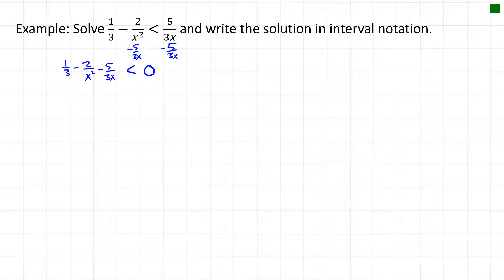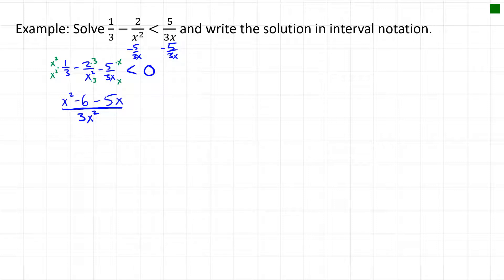We combine everything into one fraction with lowest common denominator 3x². Multiplying the first term by x²/x², the second by 3/3, and the third by x/x gives (x² − 6 − 5x) / (3x²) < 0.